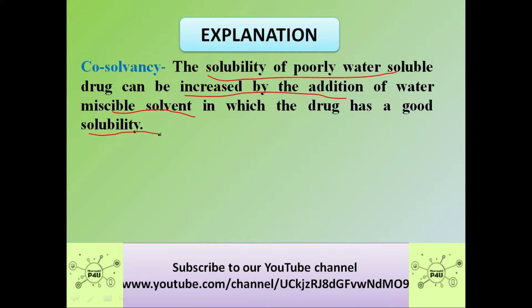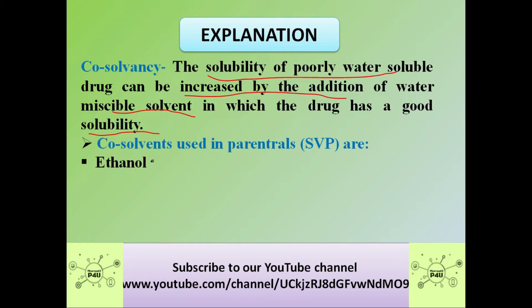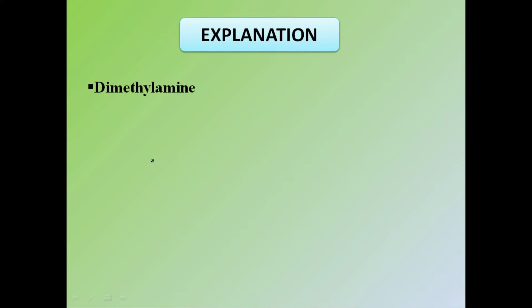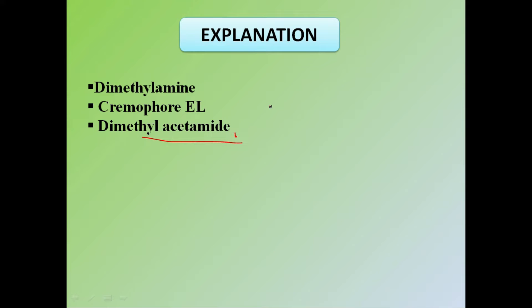Examples of co-solvents used in parenterals include: ethanol, propylene glycol, polyethylene glycol, glycerin, dimethylamine, Cremophor EL, dimethyl acetamide (which is the answer to the question), dimethyl isosorbide, and sorbitol. These are the co-solvents used in parenteral products, and the correct answer is dimethyl acetamide.